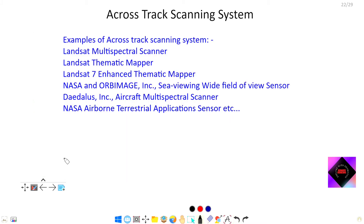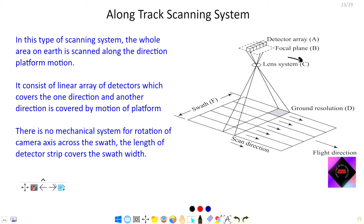Some examples of cross-track scanning systems include Landsat Multispectral Scanner, Landsat Thematic Mapper, Landsat 7 Enhanced Thematic Mapper, and others. More examples are available in the Telegram group. Now moving further to the along-track scanning system.